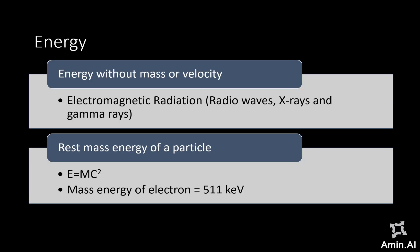Energies can also exist in two forms. One is energy without mass or velocity, as seen in electromagnetic radiation. The other is the rest mass energy of a particle, which depends on the mass of the particle and is derived from E = mc². The rest mass energy of the electron is 511 kiloelectron volts.